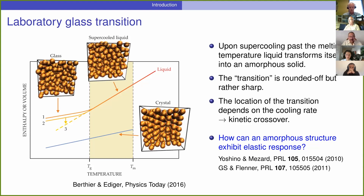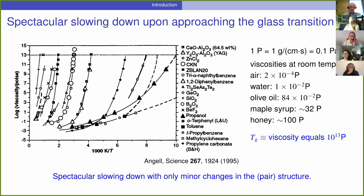There are many interesting questions about this transition and the response of the glass to external perturbations. One of the questions I was struggling with is how can an amorphous structure — very similar to the structure of a liquid — exhibit elastic response? We published some work on this subject, and I think it's still an open area of research. What we are interested in here is slowing down — the most spectacular phenomenon that happens upon approaching the glass transition. We can see slowing down as measured by viscosity plotted as a function of inverse temperature, by some 12 to 15 orders of magnitude. This slowing down is not accompanied by any major structural change, which makes it a very challenging problem to describe.